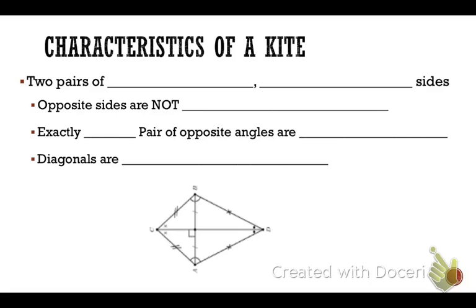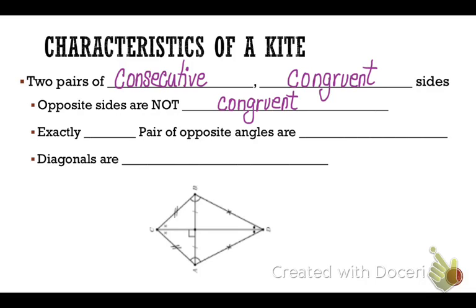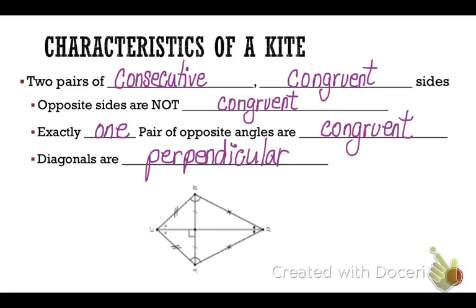Let's look at the characteristics of a kite. A kite has two pairs of consecutive — that means next to each other — congruent sides, but opposite sides are not congruent. A kite has exactly one pair of opposite angles that are congruent. You can see that angle A and angle B are the opposite angles that are congruent. And the diagonals of a kite are perpendicular, just like in a rhombus.